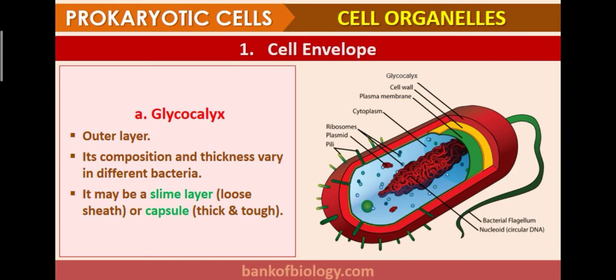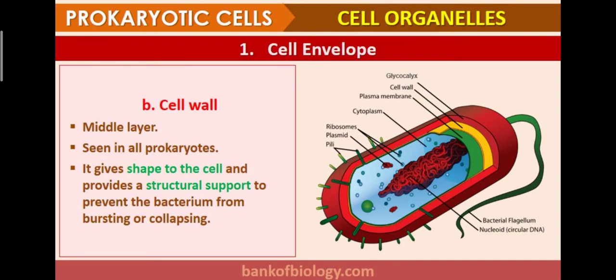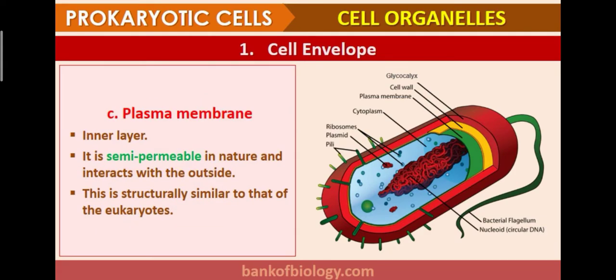The glycocalyx is the outer layer of the cell. Its composition and thickness vary in different bacteria — it may be a loosely-knit slime layer or a thick, tough capsule. The cell wall is the middle (yellow) layer, seen in all prokaryotic organisms. It gives shape to cells, provides support, and prevents the bacterium from bursting or collapsing. The plasma membrane is the inner layer and is semi-permeable in nature, structurally similar to that of eukaryotic cells.